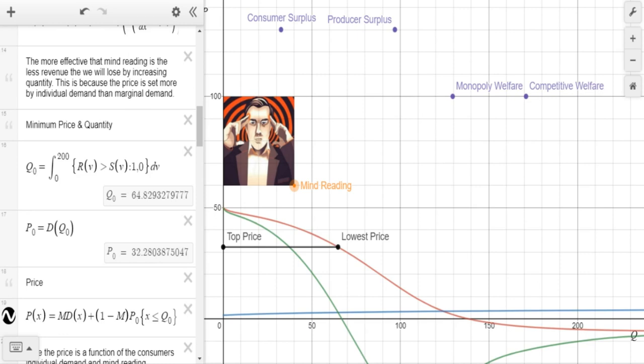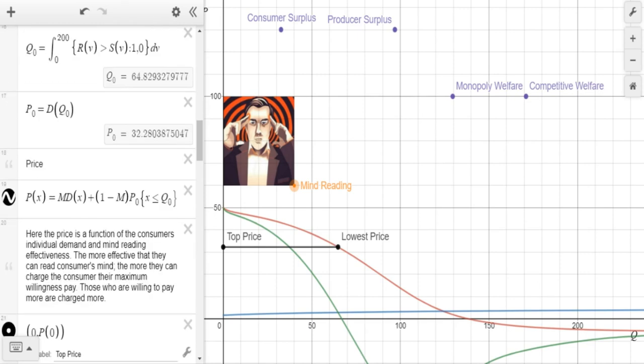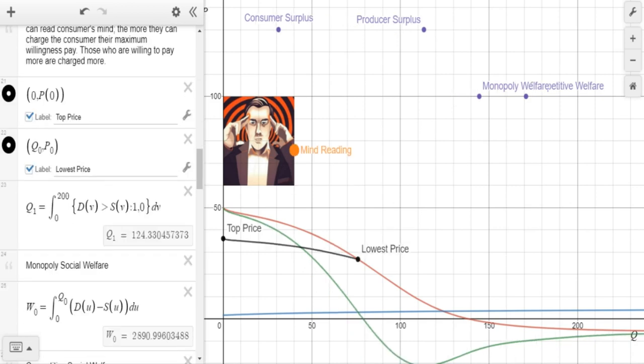So here we have our minimum price and quantity. And price right here is a function of the individual demand and mind reading effectiveness. The more effectively that they can read consumers' minds, the more they can charge the consumers their maximum willingness to pay. Those who are willing to pay more are charged more. As we can see, the more mind reading that we employ, the top price increases and the lowest price decreases.